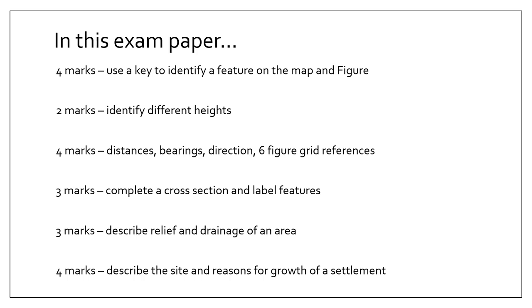To recap this particular exam paper: four marks require you to use a key to identify a feature on the map. Two marks require you to identify different heights. Four marks ask you to work out distances, bearings, direction, and the six-figure reference. Three marks ask you to complete a cross-section and label some features on it. A further three marks to describe the relief and drainage of an area, and the final four marks ask you to describe the site and reasons for growth of a settlement.